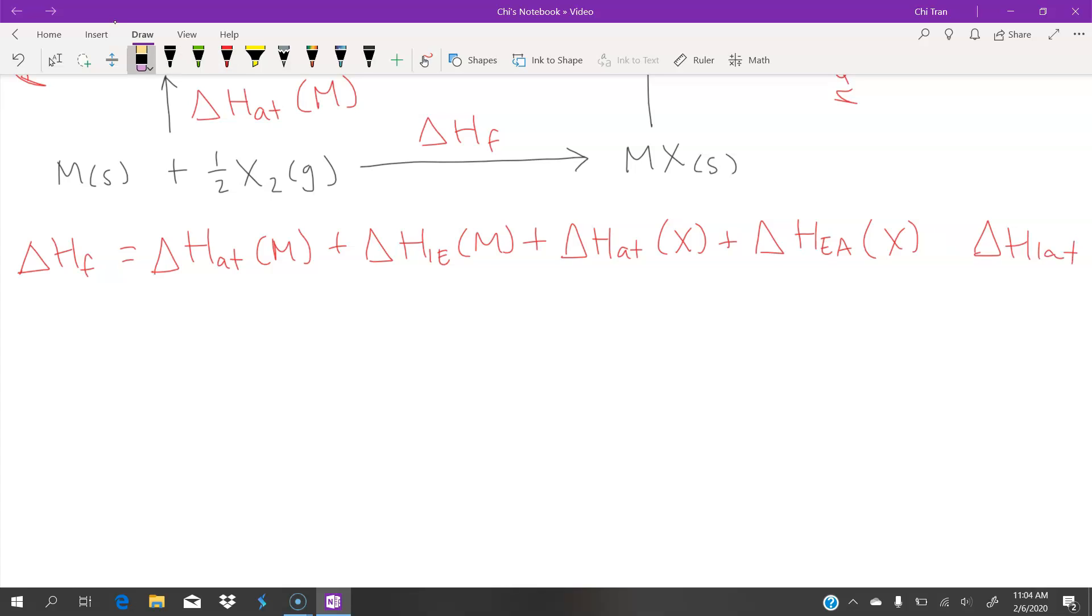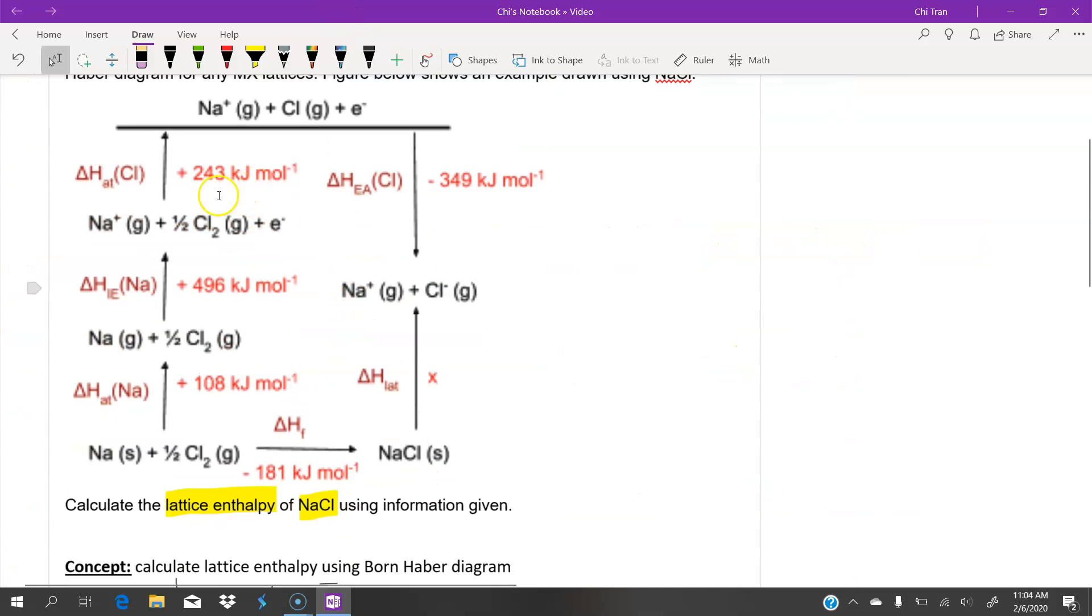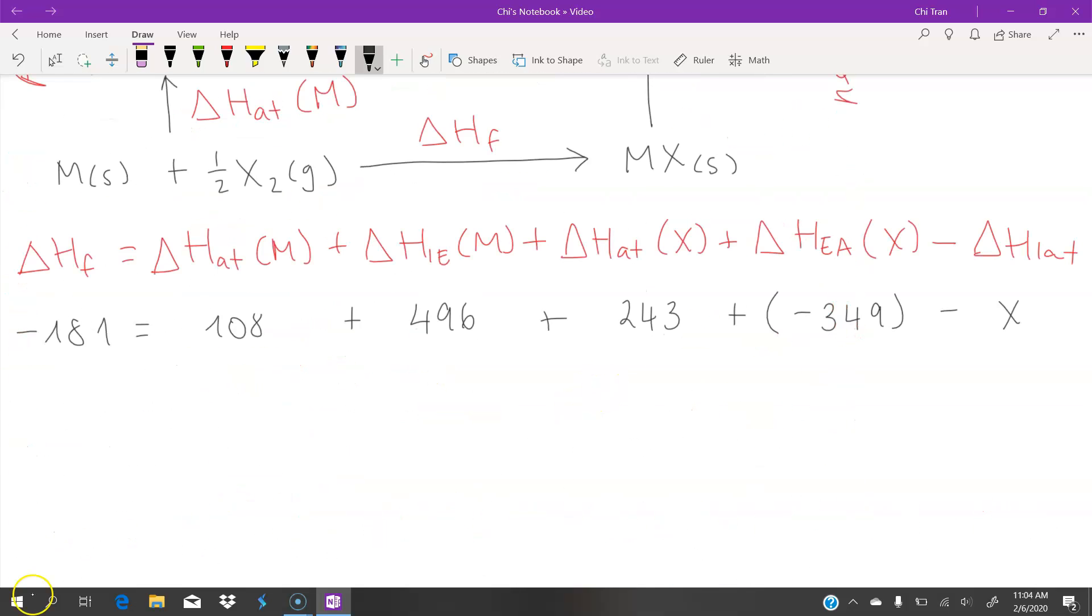Now we can go back to our question and use all these values and plug it into our equation. Once we calculate that, x will become 679. Remember our units, which is kilojoules per mole. And that is our final answer.